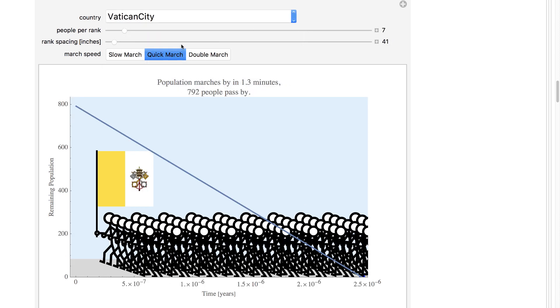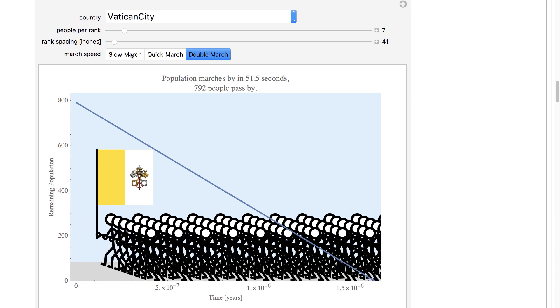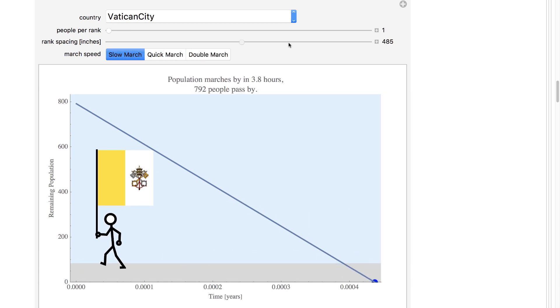All 792 people in the Vatican City can pass by in a minute. Or you could stretch it out for hours.